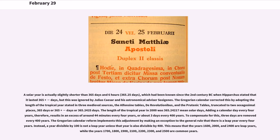The Gregorian calendar corrected this by adopting the length of the tropical year stated in three medieval sources — the Alfonsine tables, De Revolutionibus, and the Prutenic tables — truncated to two sexagesimal places: 365 days, 5 hours, 49 minutes, 16 seconds, or 365.2425 days.